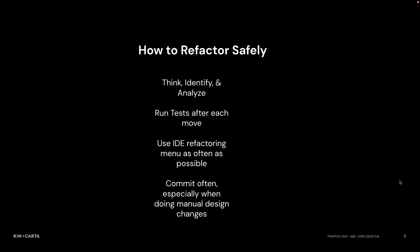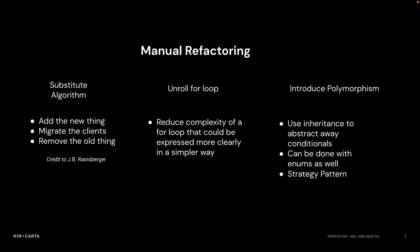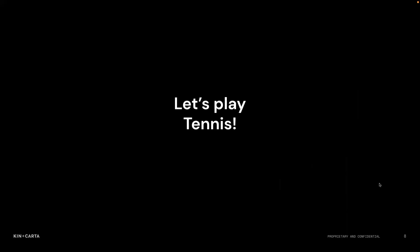We'll be doing commits in stages as well. There will be situations where the IDE can't help us and we'll have to work manually. Some of those situations include substitute algorithm — a refactoring where you basically rewrite something. There's a safe way to do this, credit to JB Rainsberger: first add the new thing, whether a new method or class, then make all the clients call the new thing, then remove the old thing. We'll also look at unrolling for loops and replacing conditionals with polymorphism. Okay, let's jump into it.